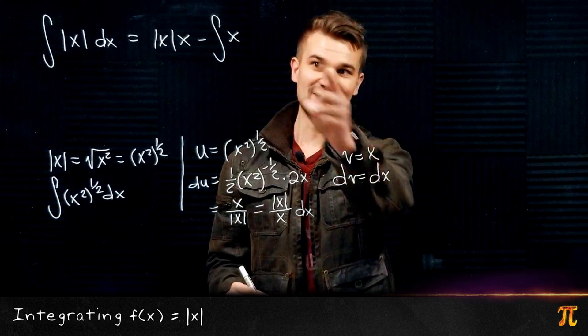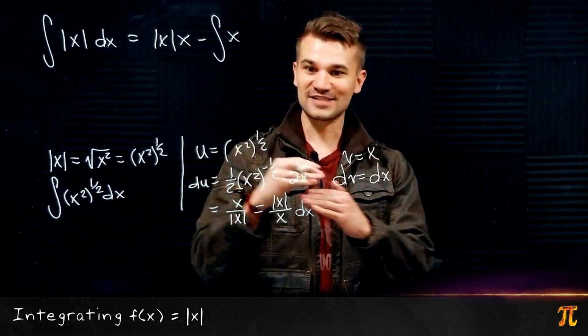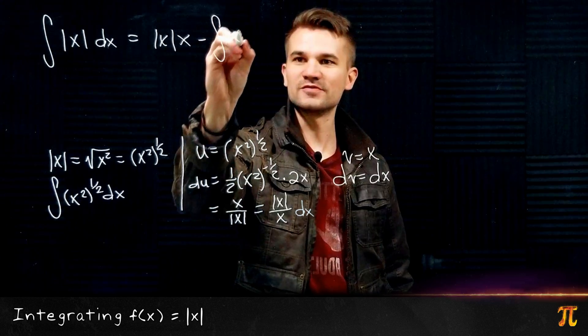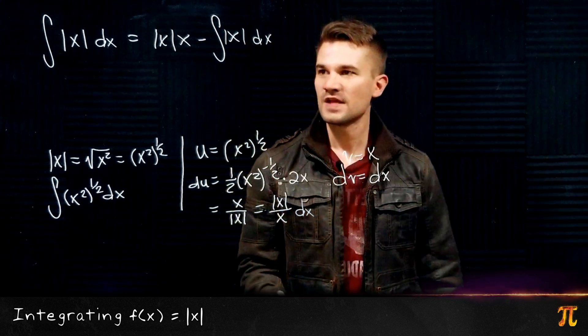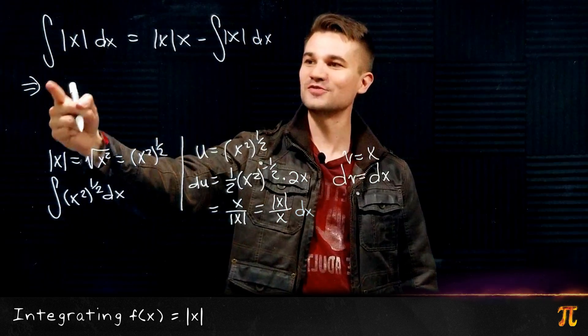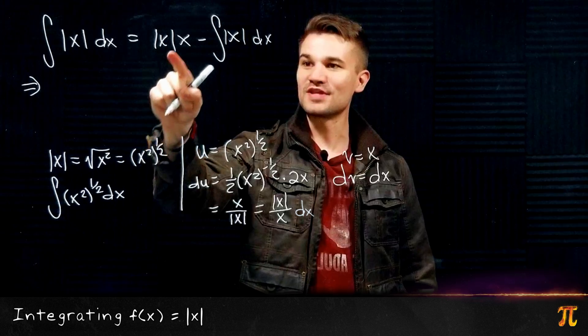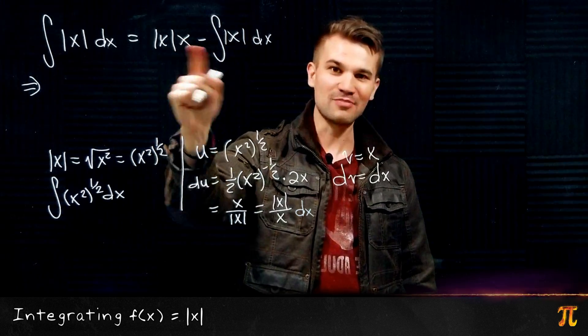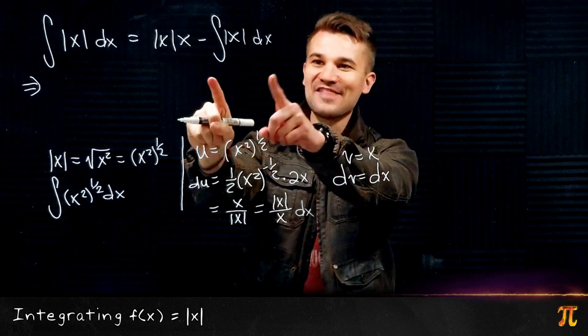Now when we multiply, the x's cancel and we're left with the absolute value of x here. And so since we have that the integral of |x| equals |x| times x and so on, we can add this to both sides of the equation. That's the point here.